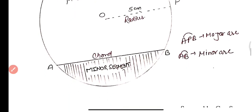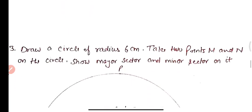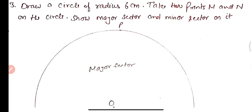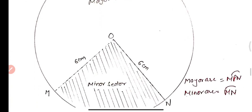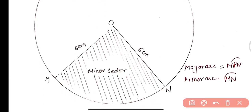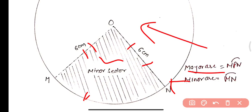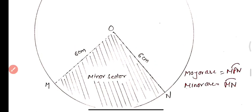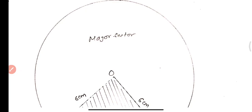Question three: draw a circle of radius 6 centimeters and take points M and N on the circle to show the major sector and minor sector. You all know that a sector is formed by the corresponding radii and the corresponding arc. Here OM and ON are the radii equal to 6 centimeters. The two radii and minor arc MN form the minor sector, and the major arc MPN together with radii OM and ON form the major sector.